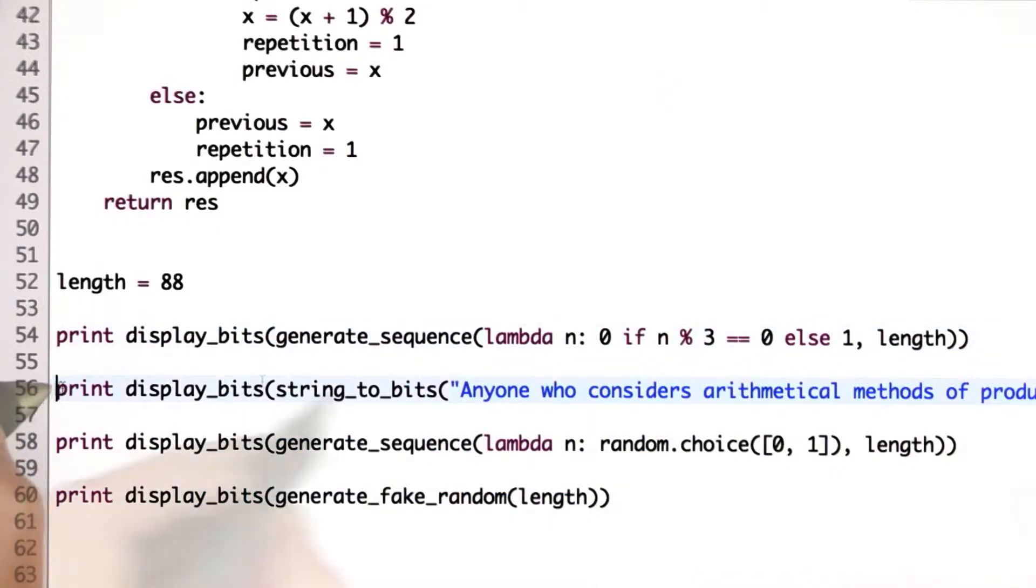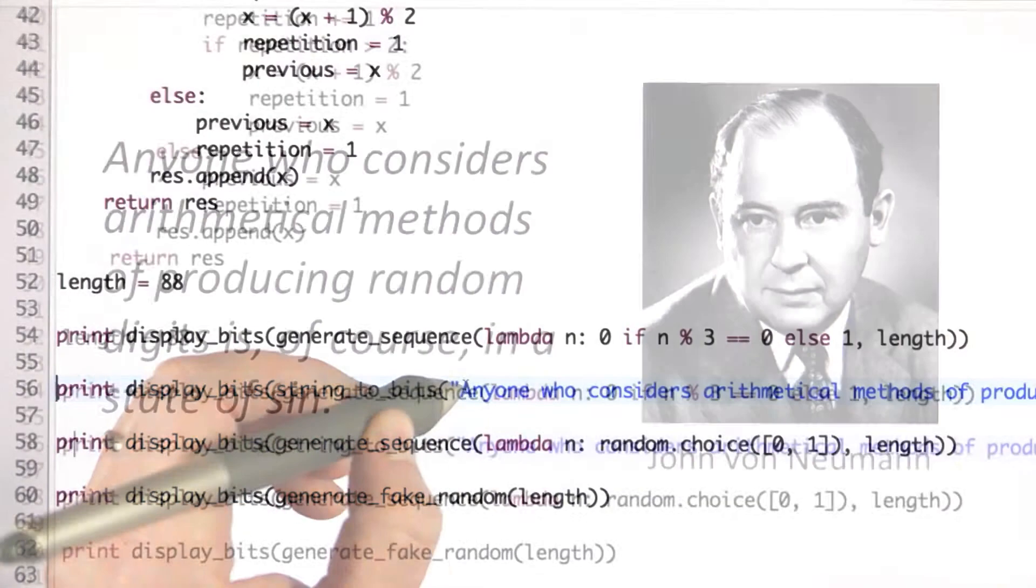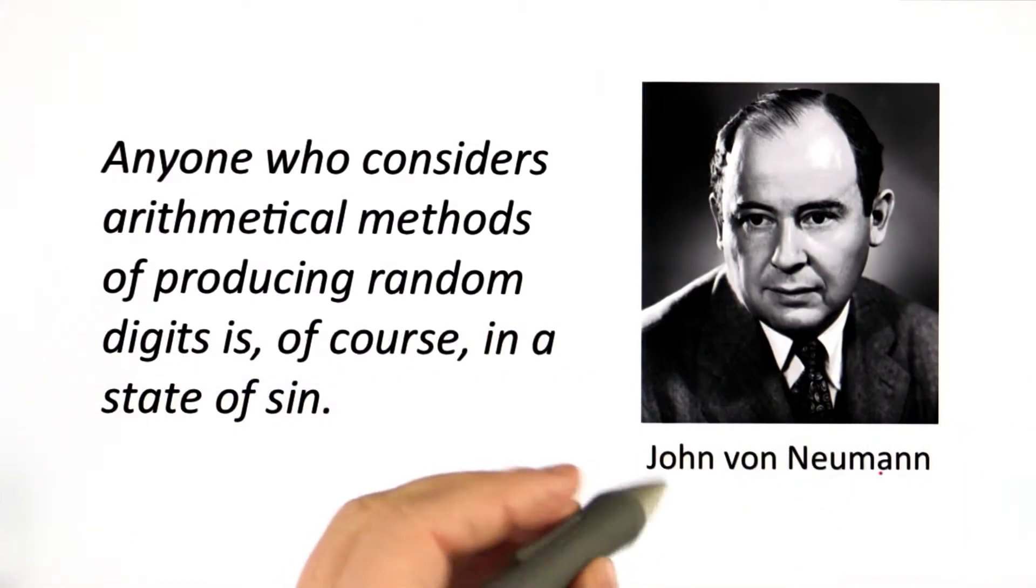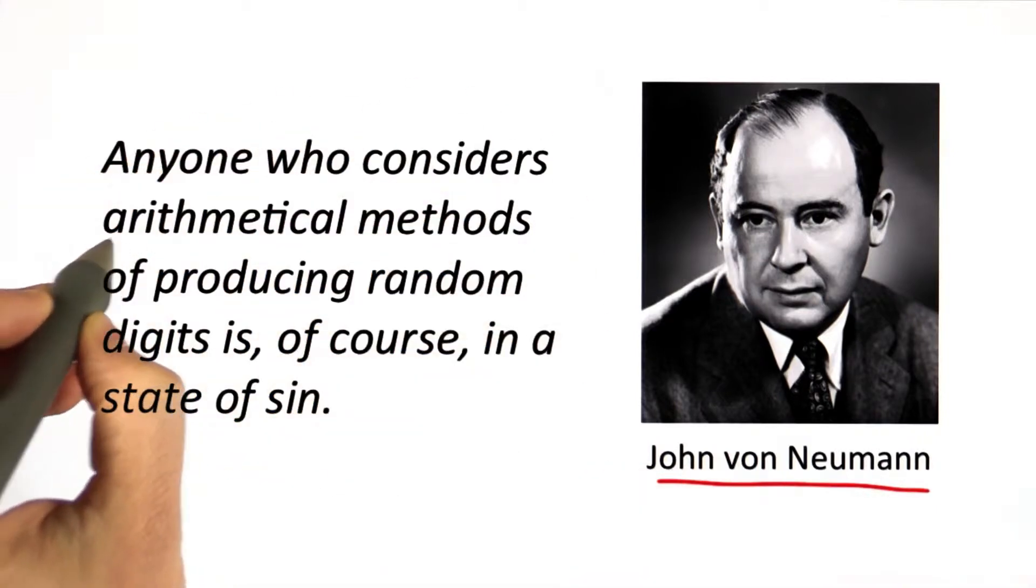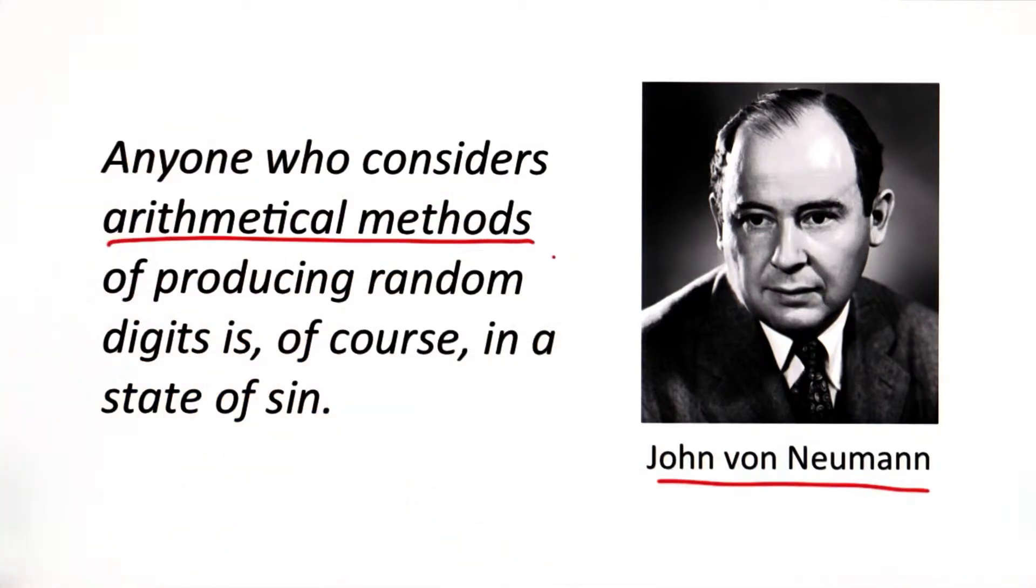The second one is taking a string, converting it into bits, and displaying those bits. And the string is this great quote from John von Neumann. And what the quote says is that anyone who considers arithmetical methods of producing random digits is, of course, in a state of sin.